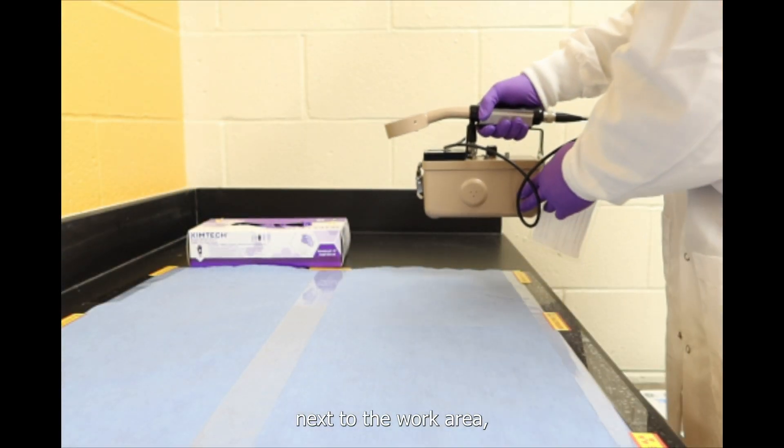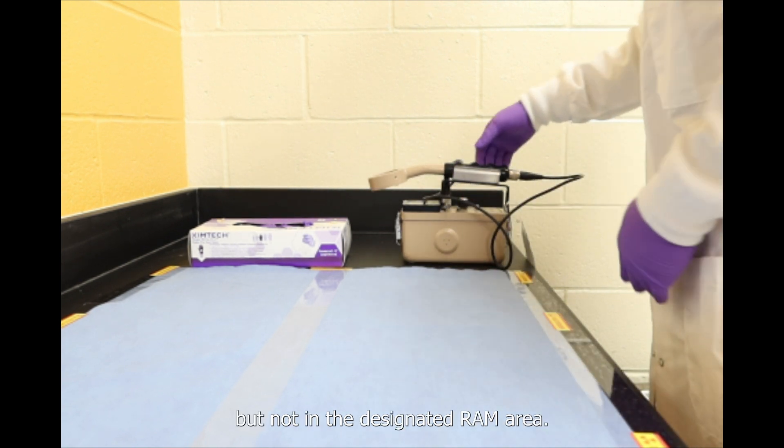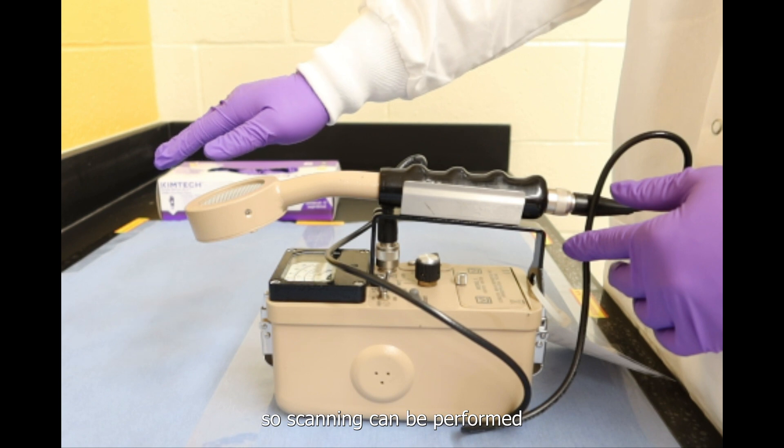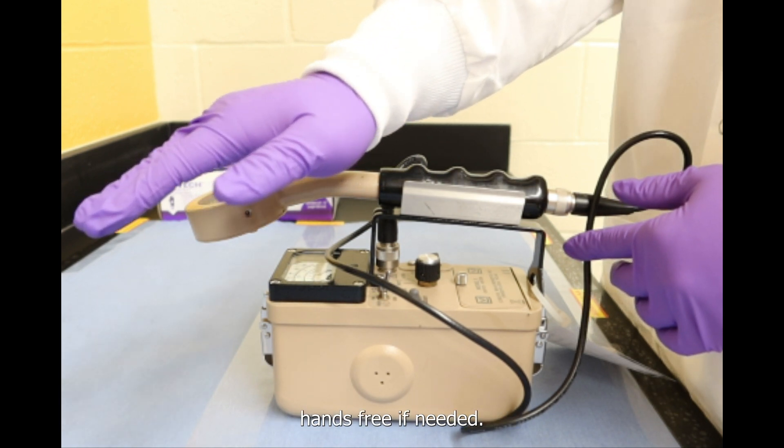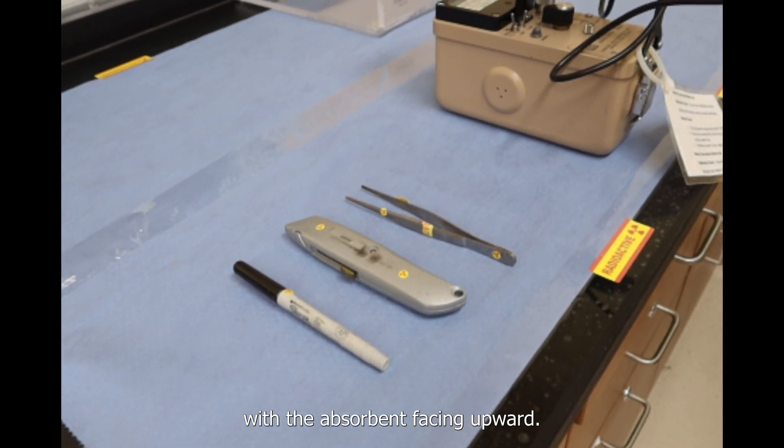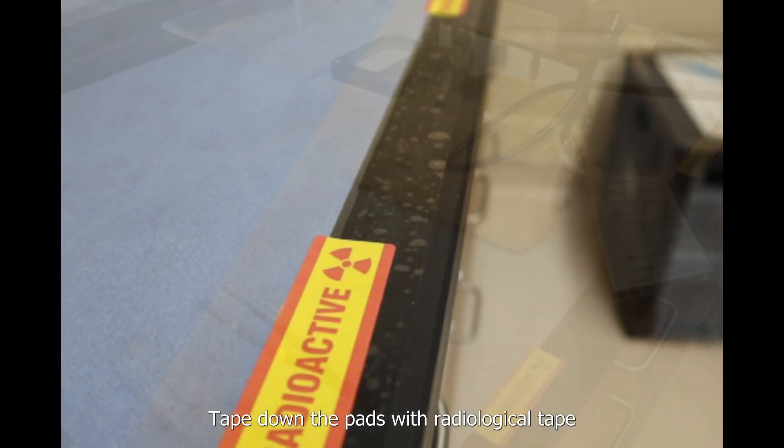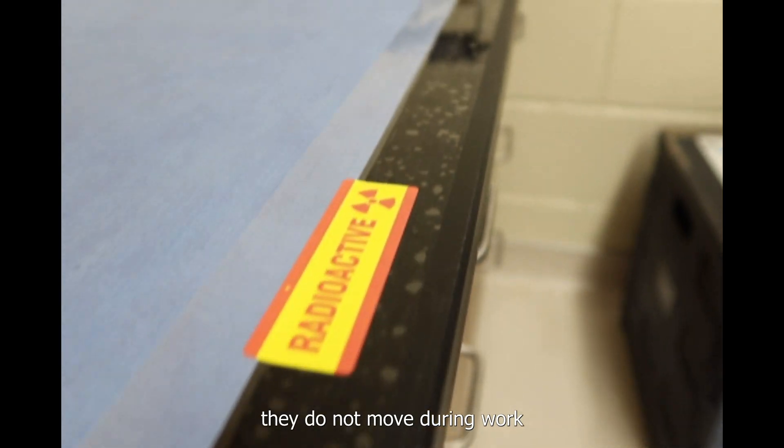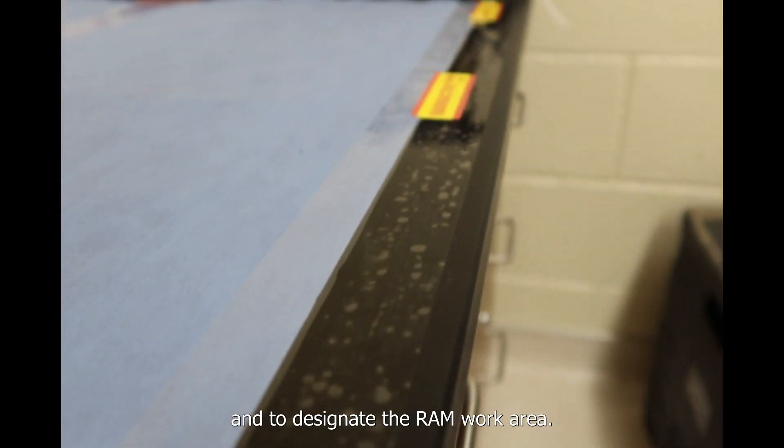Stage the meter immediately next to the work area but not in the designated RAM area. Position the probe so scanning can be performed hands-free if needed. Set up absorbent pads with the absorbent facing upward. Tape down the pads with radiological tape to ensure they do not move during work and to designate the RAM work area.